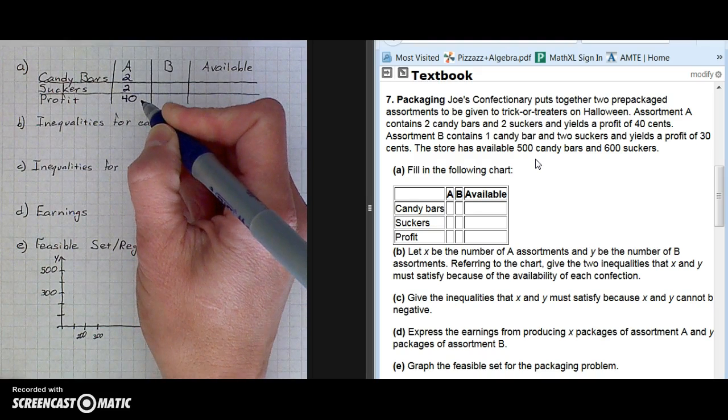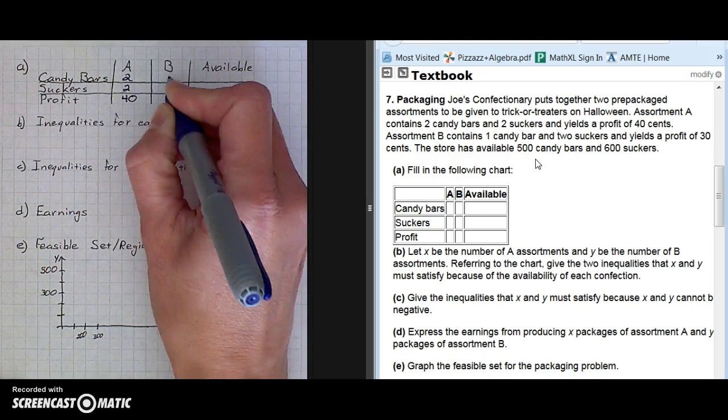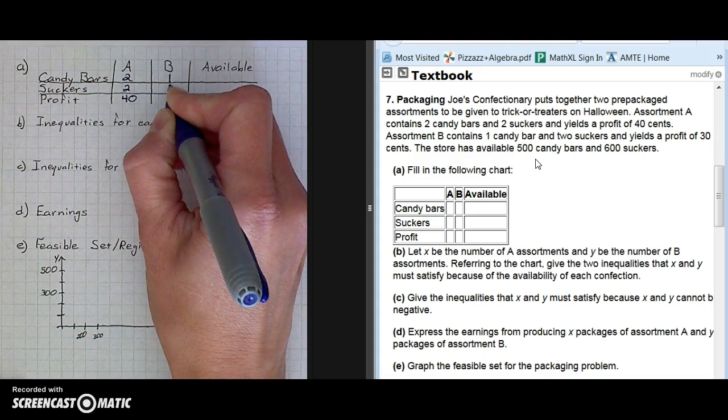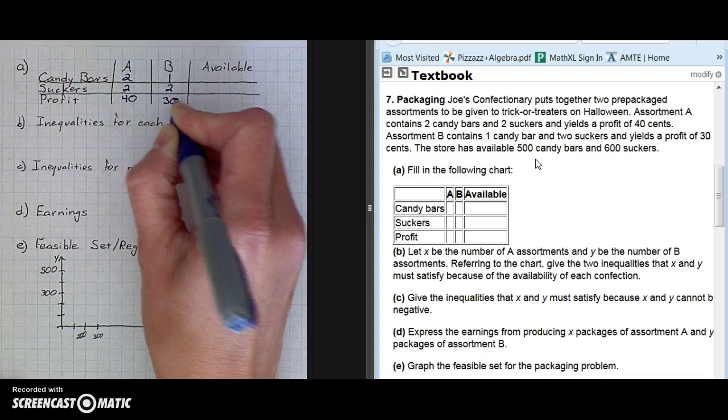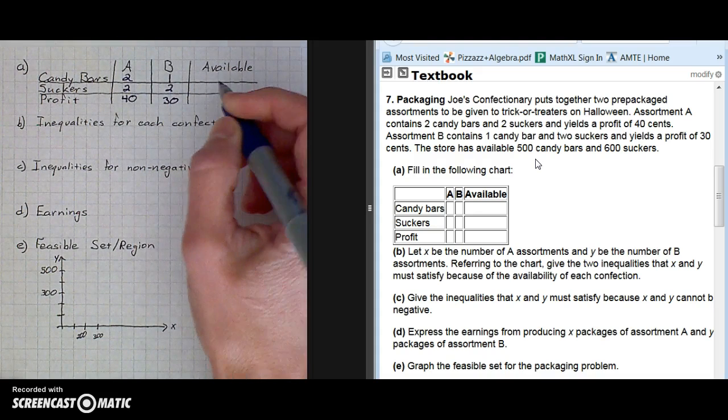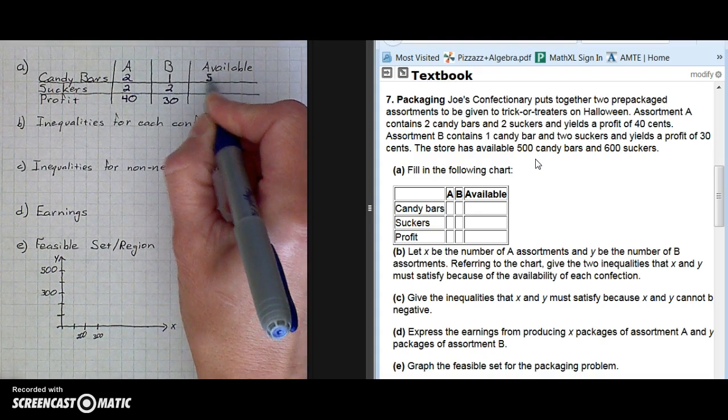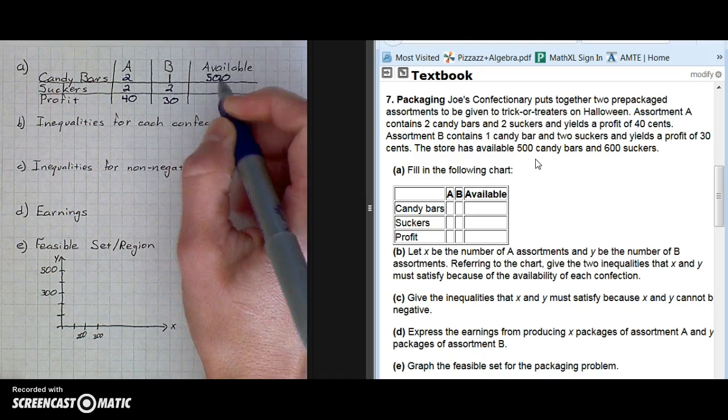Confectionary B has one candy bar, two suckers, and yields a profit of 30 cents. The store has available 500 candy bars, 600 suckers.